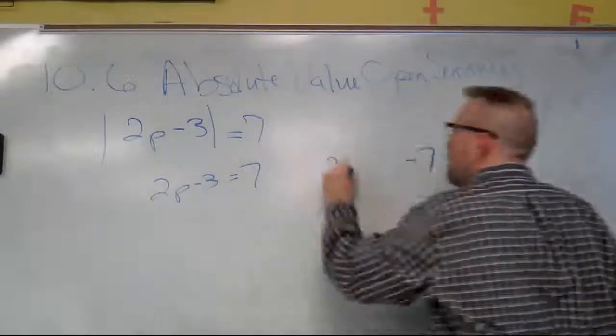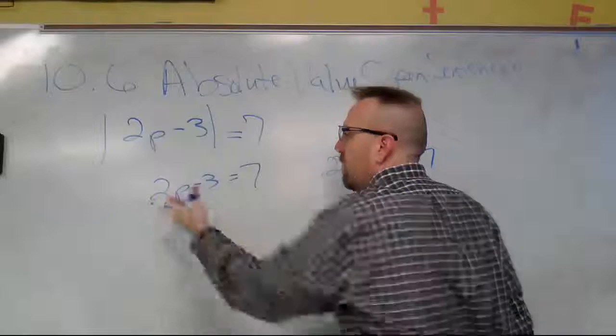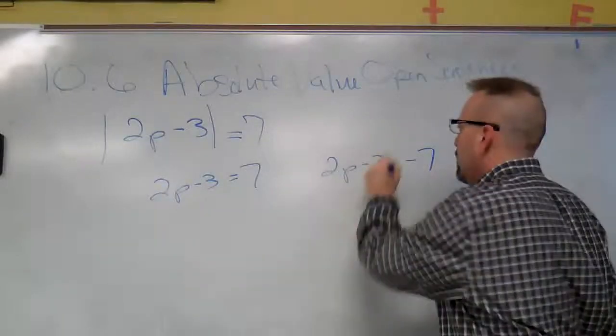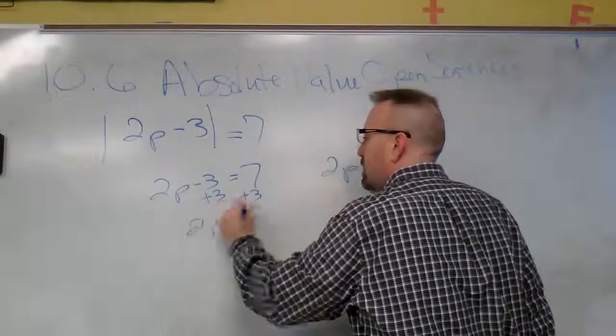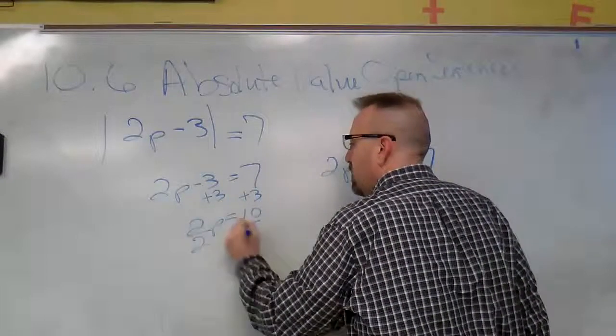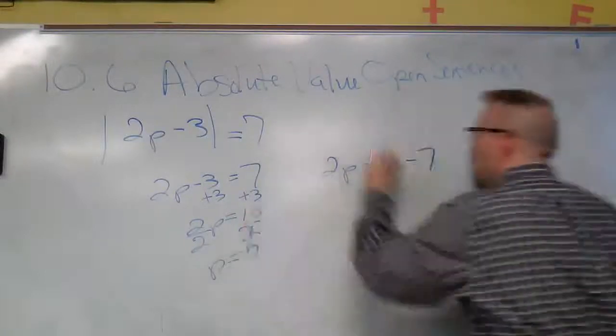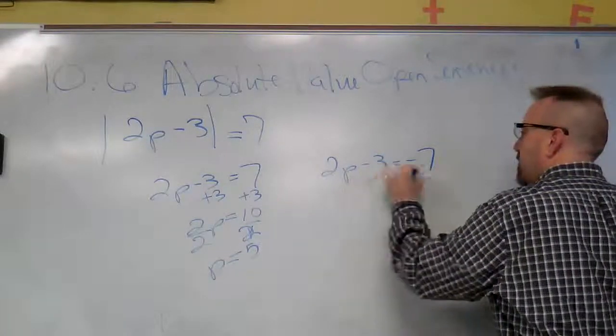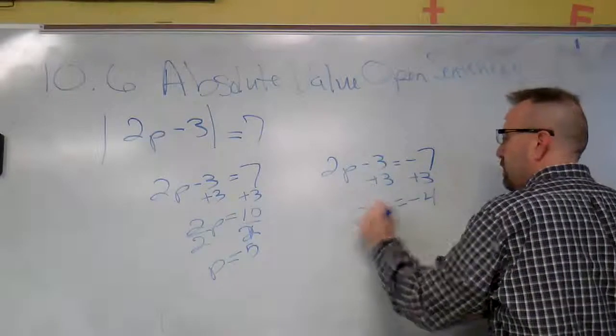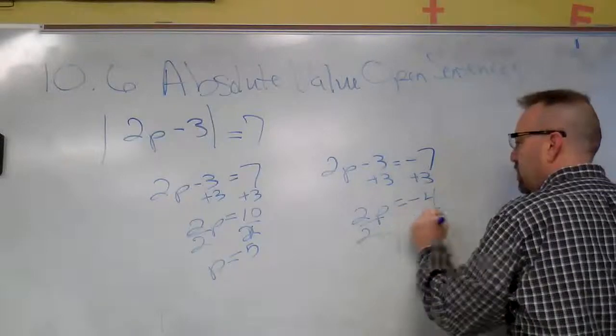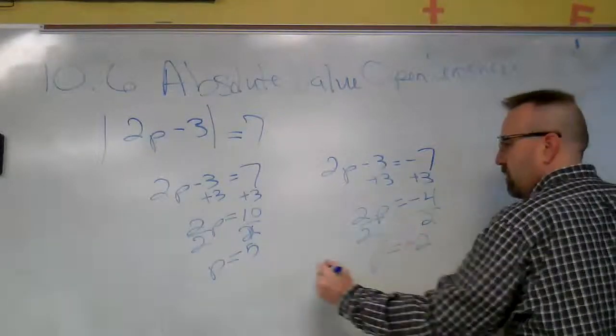So we add three: 2p equals 10, divided by two, p equals 5. Over here we add three to negative four: 2p equals negative 4, divided by two, p equals negative 2. So p equals 5 or p equals negative 2.